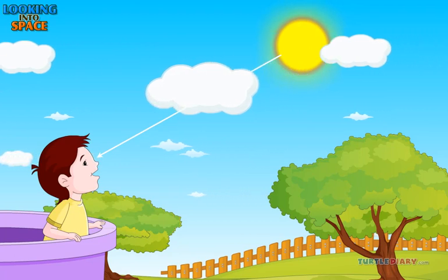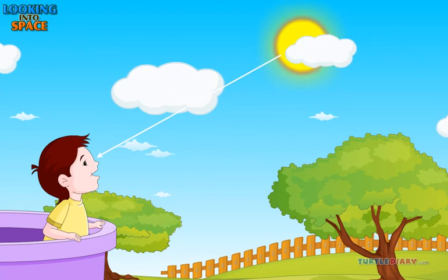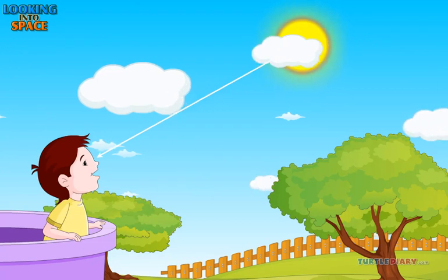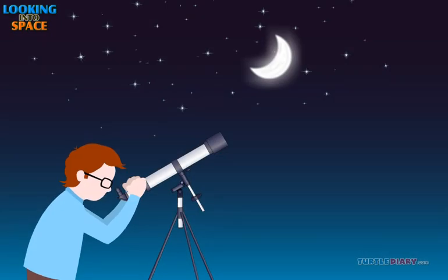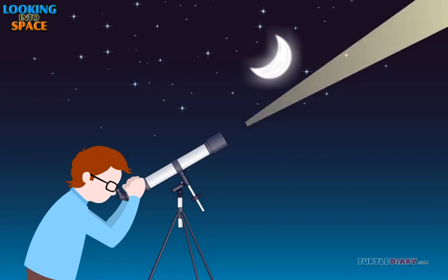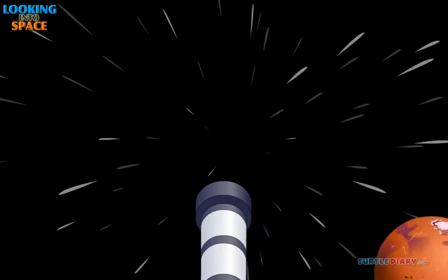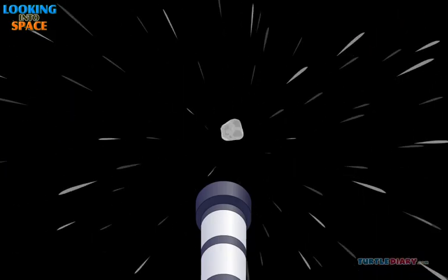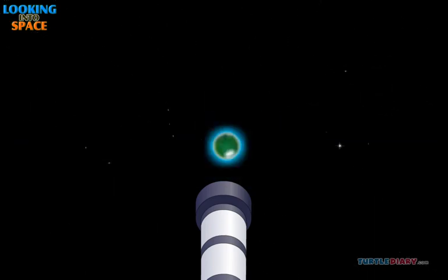Then, how can we see things that are very far away? We use a telescope for that. A telescope is like a big eye. So, it takes in a lot more light. And it makes things that are far away look bigger.